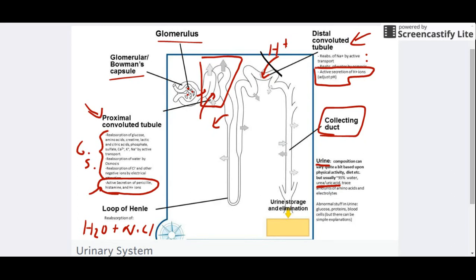Abnormal stuff: this is abnormal because glucose is good for us. Glucose is one of those good things, all the good stuff, so glucose should be reabsorbed.